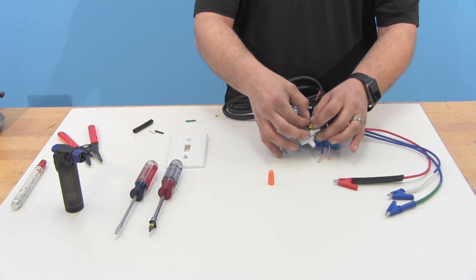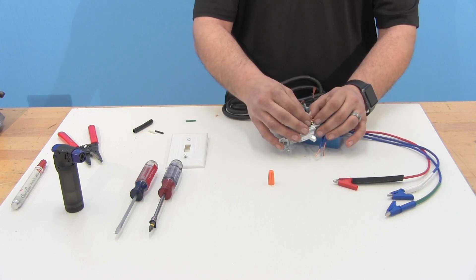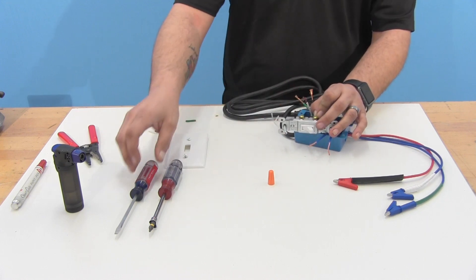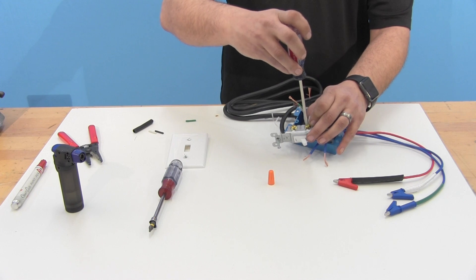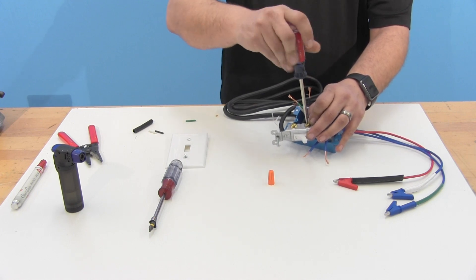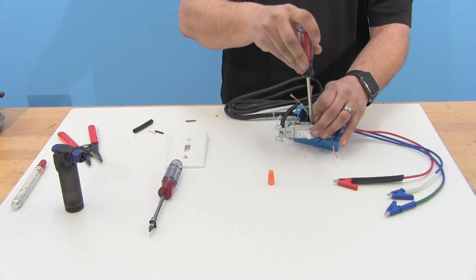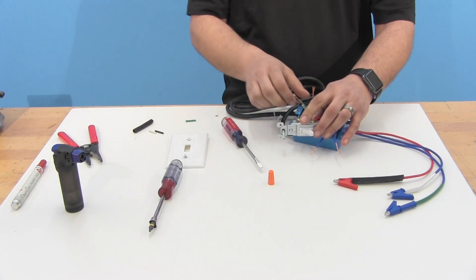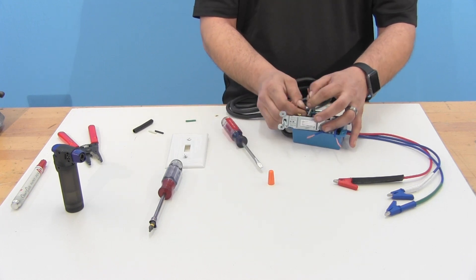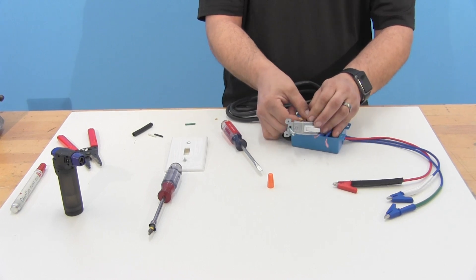We're going to go ahead and wrap these around clockwise so that way the wires do not work themselves out as we screw these down. We're going to take our black one here, wrap that around clockwise as well.